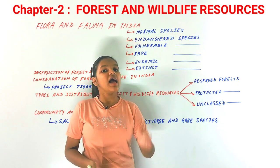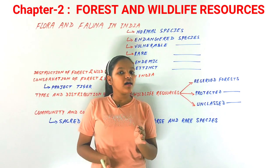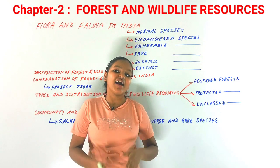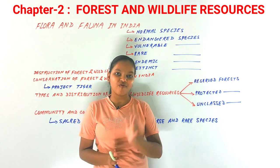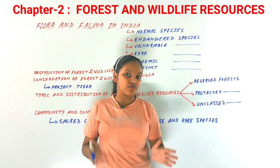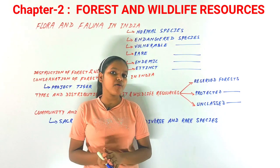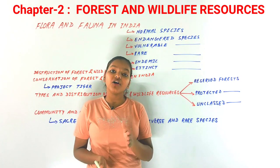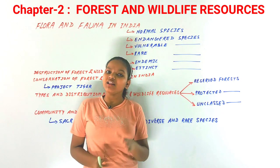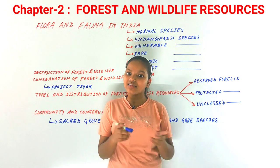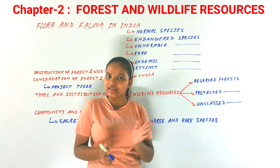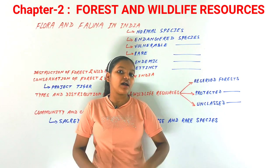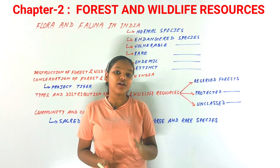As we discussed in the last chapter, biodiversity — or biological diversity — refers to the diversity of plants, animals, and microorganisms, meaning flora and fauna. This biodiversity is very important for our own existence and we cannot neglect it. You can also watch or study the first chapter for more context.